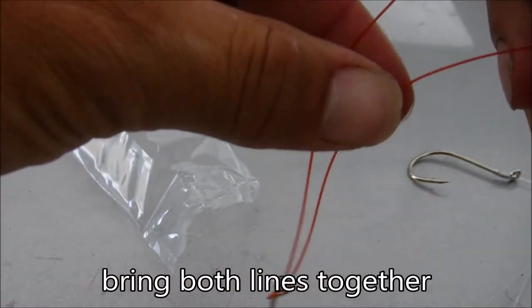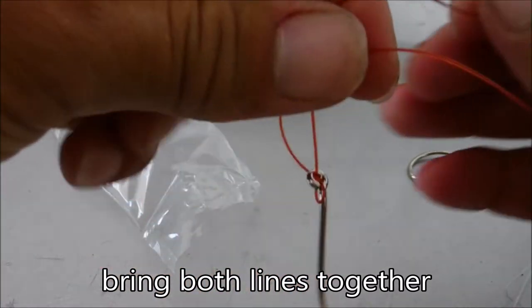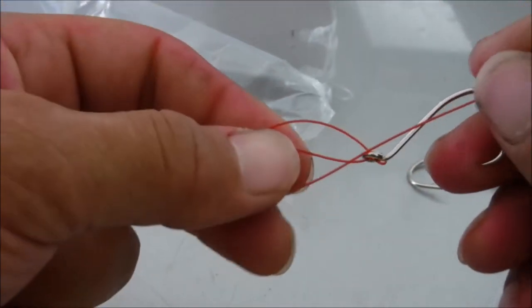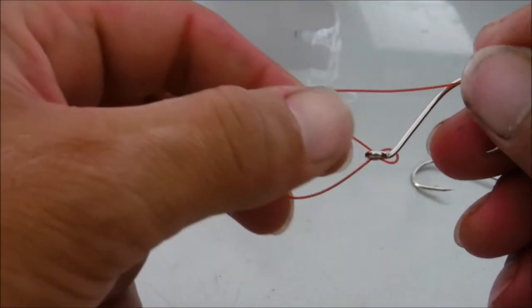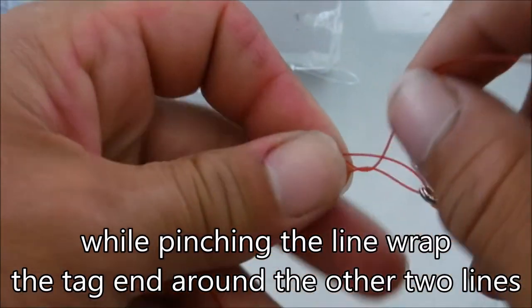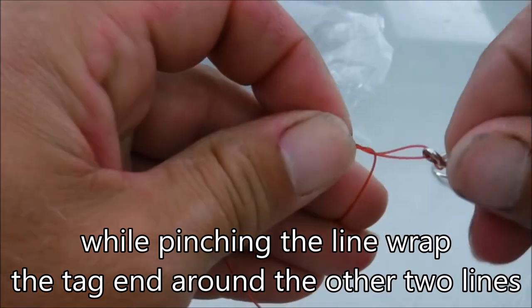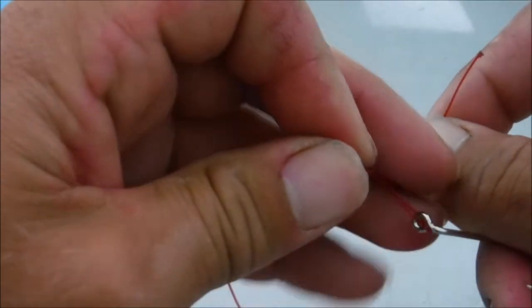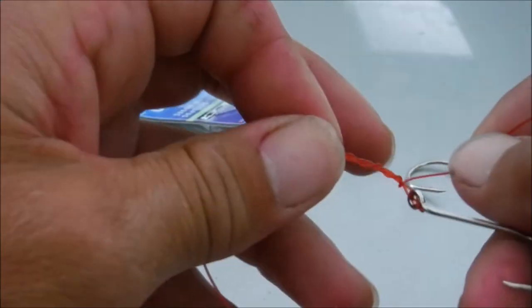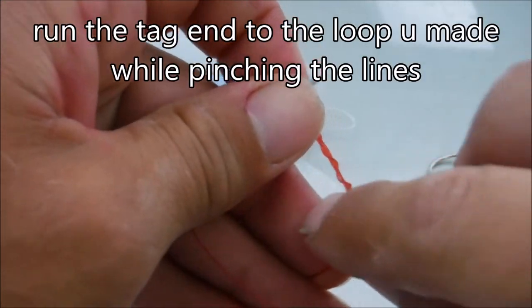Now what we're going to do is let our hook fall and pinch the lines together. We're going to fold back to our hook. I pretty much just ran it backwards. We're going to hold that together and now we are going to go around this. You can go around anywhere from 6 to 12 to 15 times as many times as you would like. The thinner the line, the more times I would go around it.